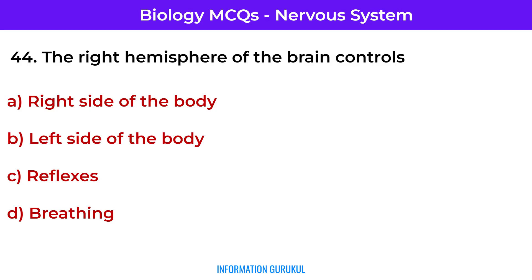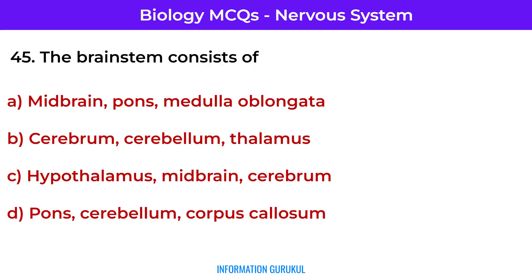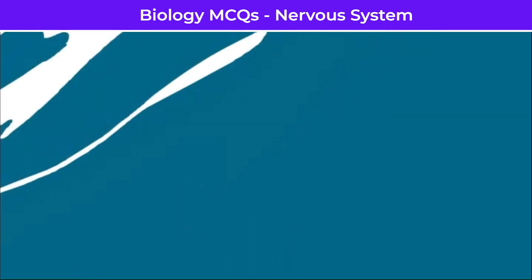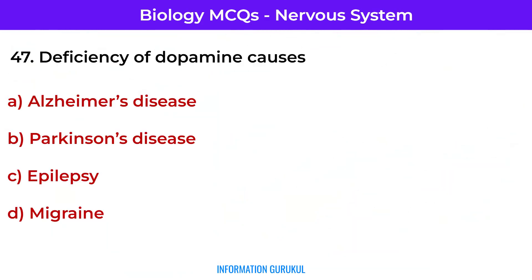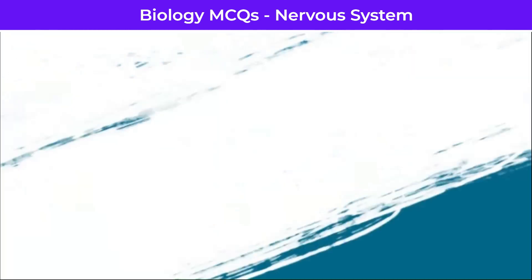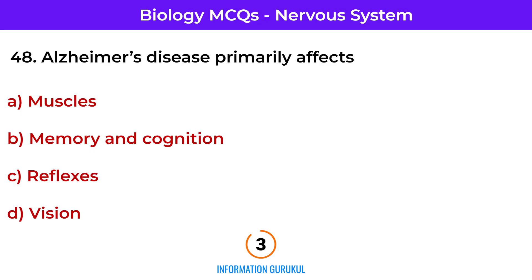The right hemisphere of the brain controls the left side of the body. The brainstem consists of midbrain, pons, and medulla oblongata. The part of the brain that relays sensory information to the cerebrum is the thalamus. Deficiency of dopamine causes Parkinson's disease. Alzheimer's disease primarily affects memory and cognition.